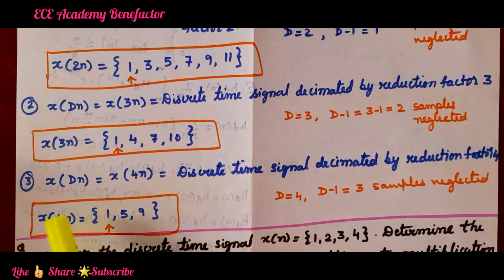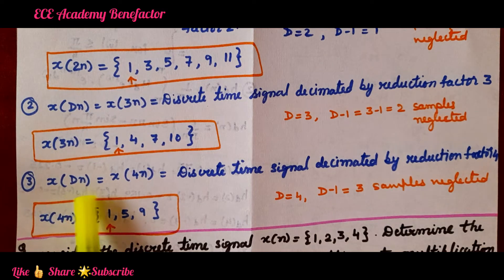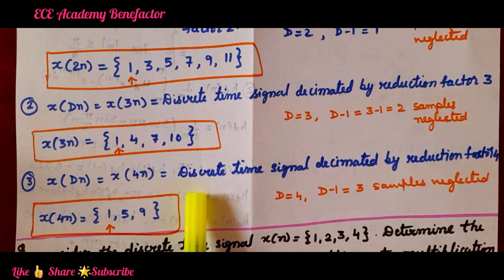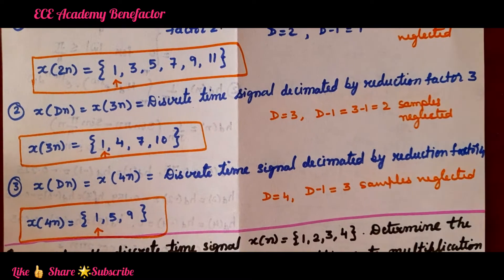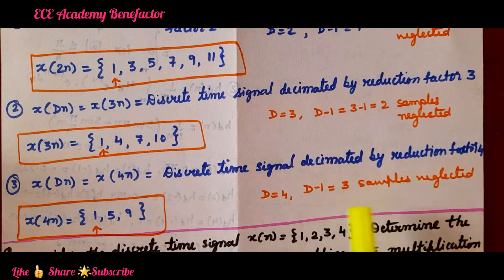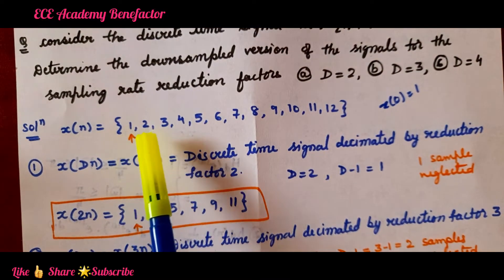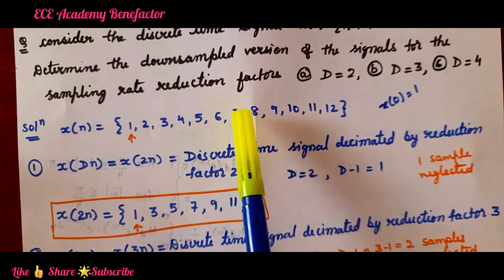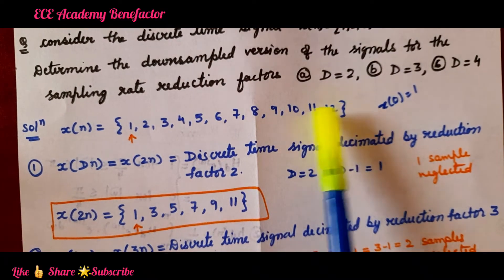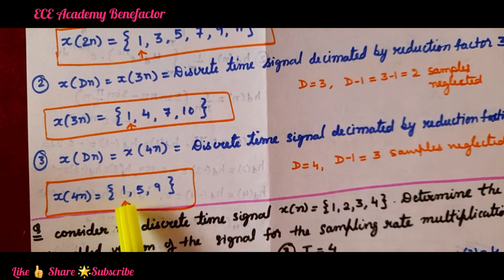The next part is downsampling by 4. The down sampled signal is x(Dn) equal to x(4n), a discrete time signal decimated by reduction factor 4. With D equal to 4, we neglect D minus 1 equals 3 samples. From the sequence, write 1 and neglect 2, 3, 4; then write 5, neglect 3 samples; write 9, neglect 3 samples. So x(4n) = {1, 5, 9}.